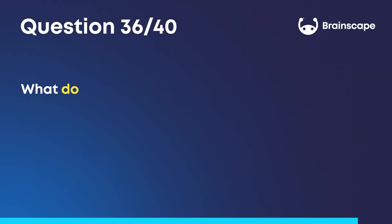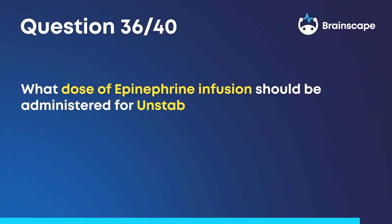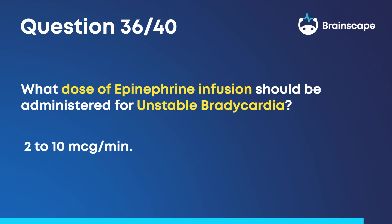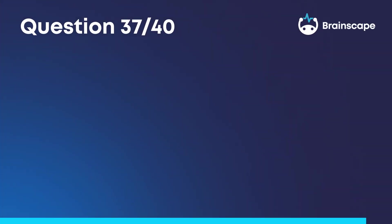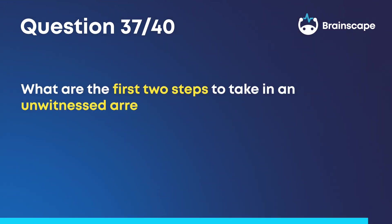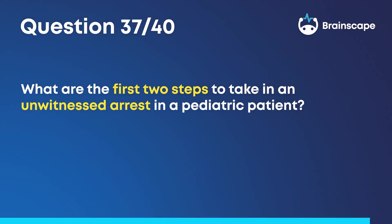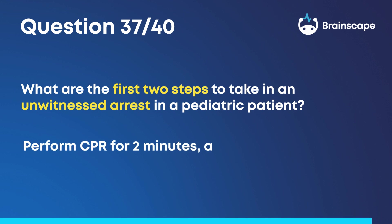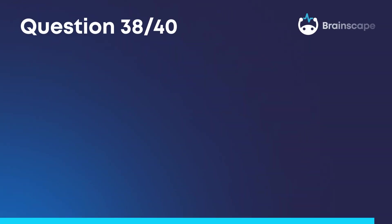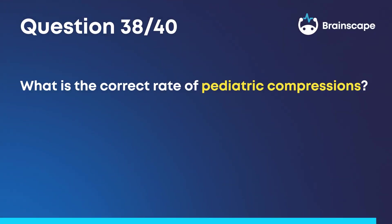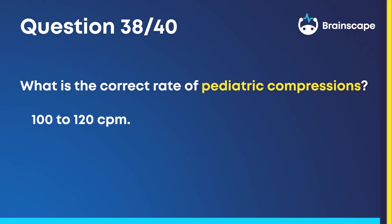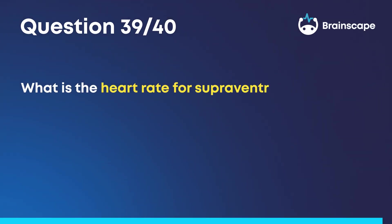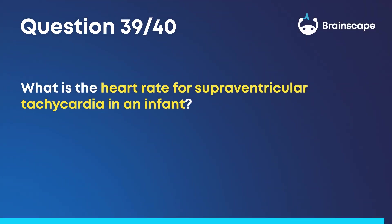Question 36: What dose of epinephrine infusion should be administered for unstable bradycardia? 2 to 10 micrograms per minute. Question 37: What are the first two steps to take in an unwitnessed arrest in a pediatric patient? Perform CPR for two minutes and then call 911. Question 38: What is the correct rate of pediatric compressions? 100 to 120 compressions per minute. Question 39: What is the heart rate for supraventricular tachycardia in an infant? More than 220 beats per minute.